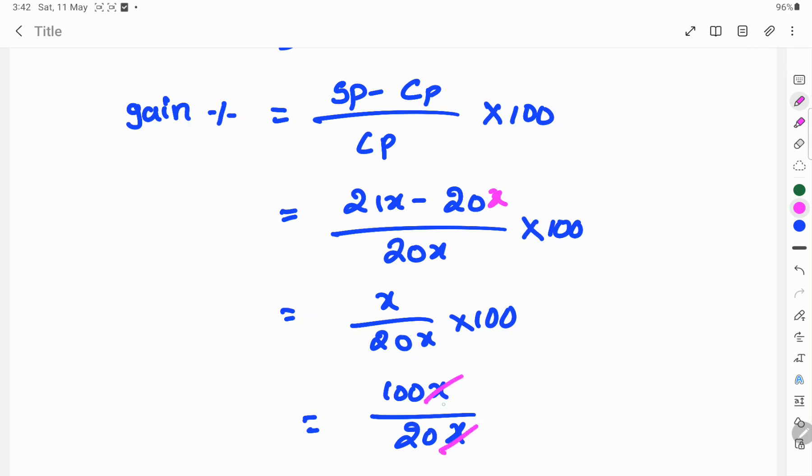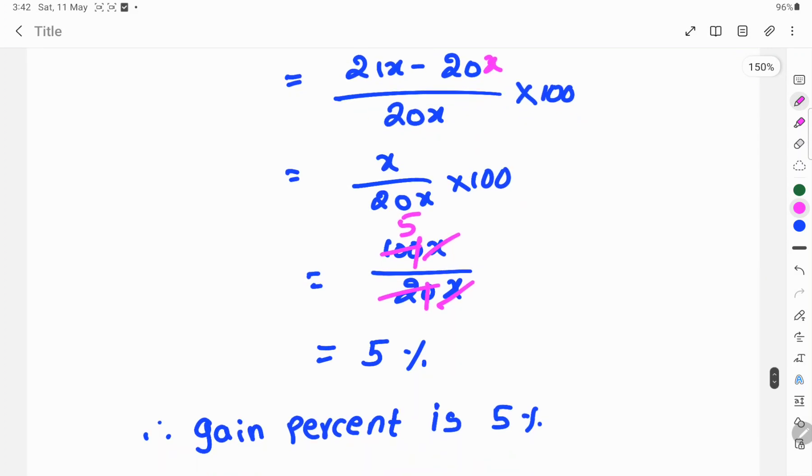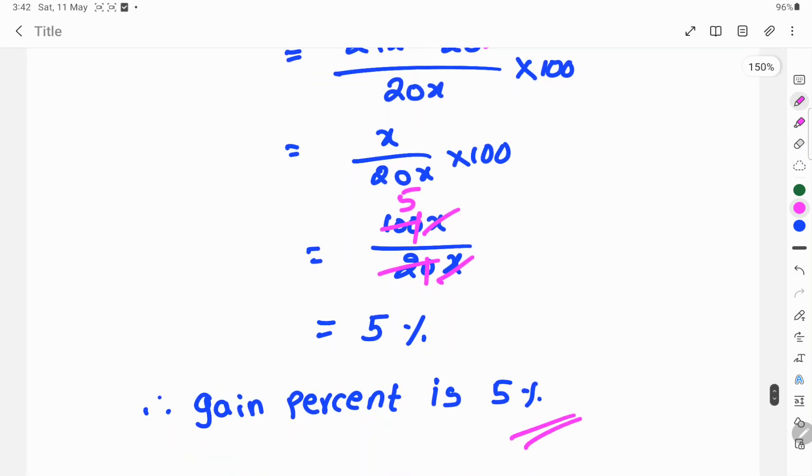Then x over x will be cancelled. Zero will be cancelled. 2 cancels into 10 five times, 5 times. So, 5 percent. Gain percent is 5 percent. This is the solution.